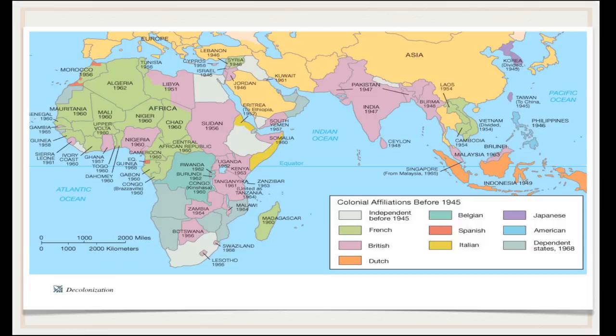Let's look at the picture before 1945. You can see that large areas of the world, largely in Africa, South and Southeast Asia, were dominated by the European colonial empires. You won't need to know every single country and which colonial power it was dominated by, but it would be helpful to have a broad understanding of the geographical area these imperial empires covered.